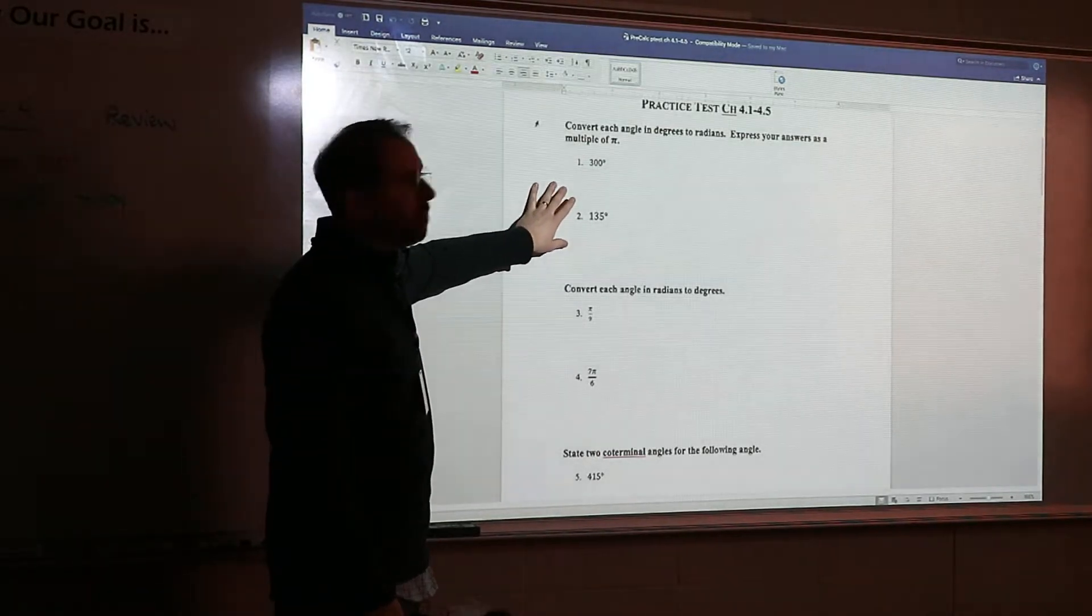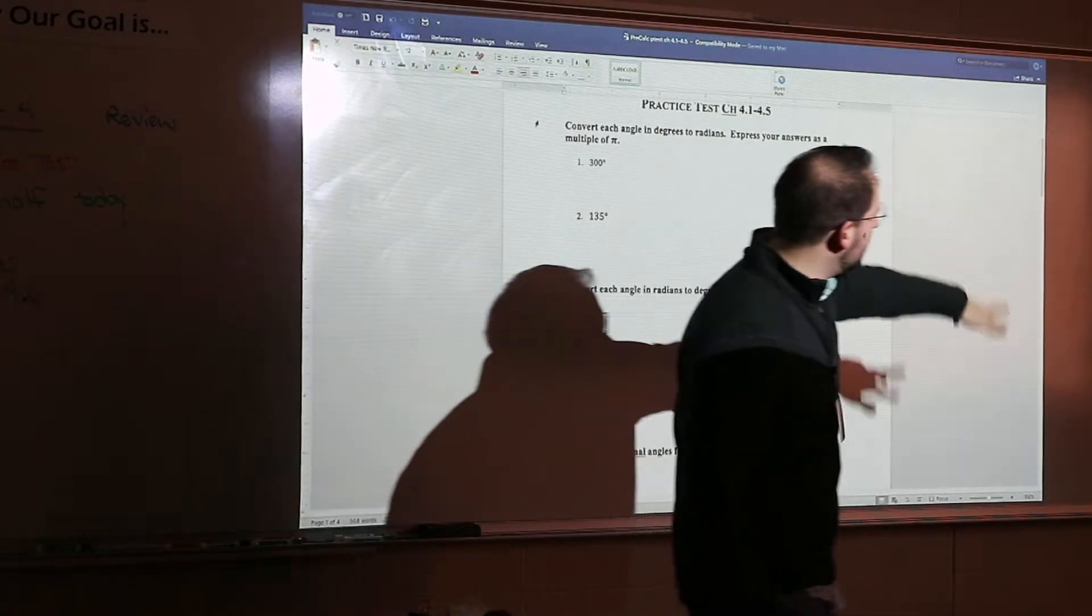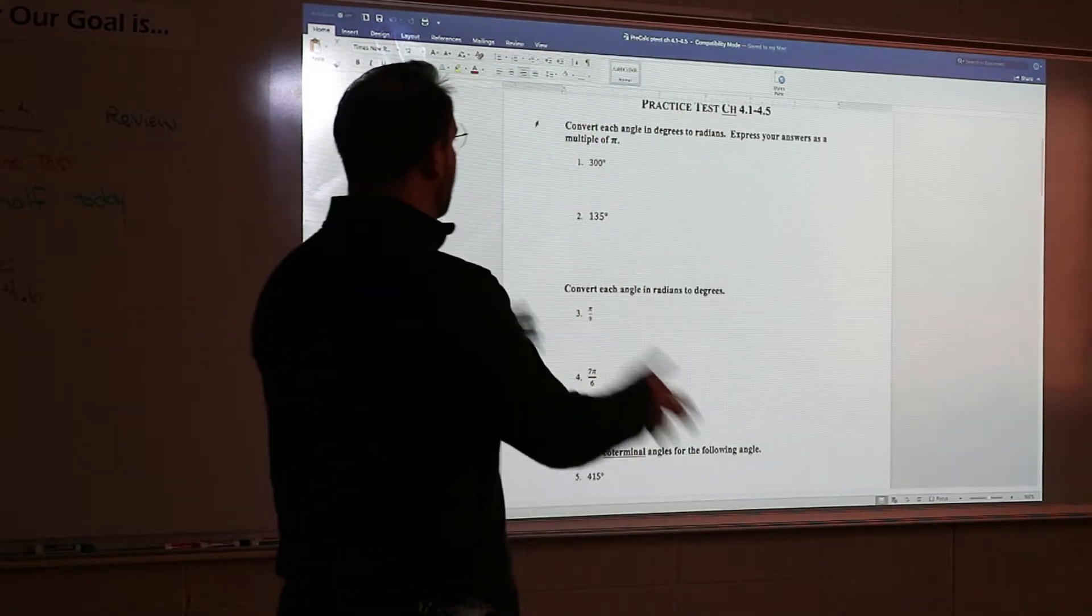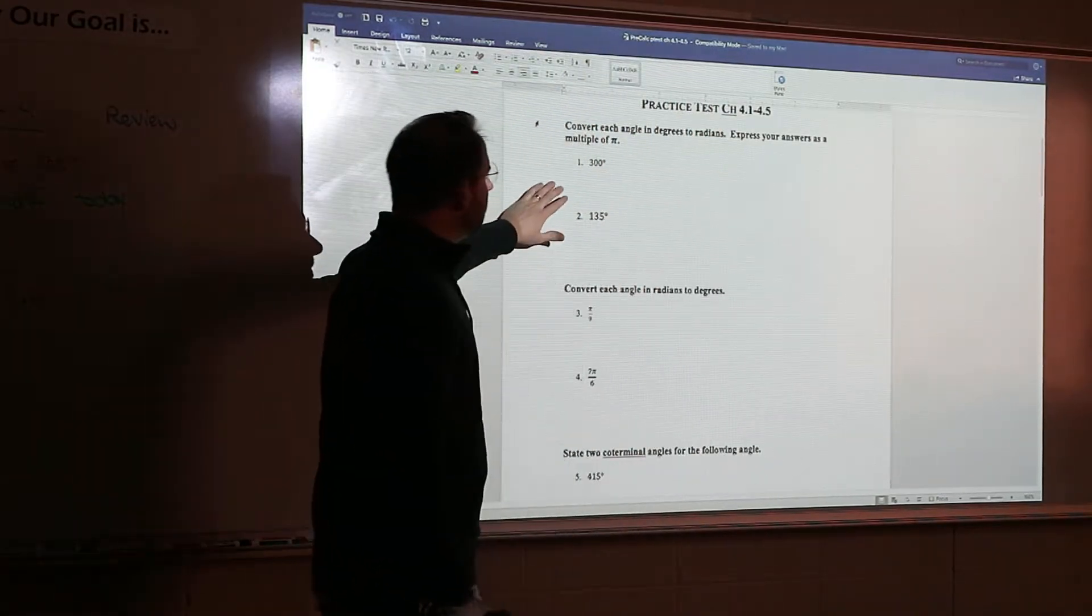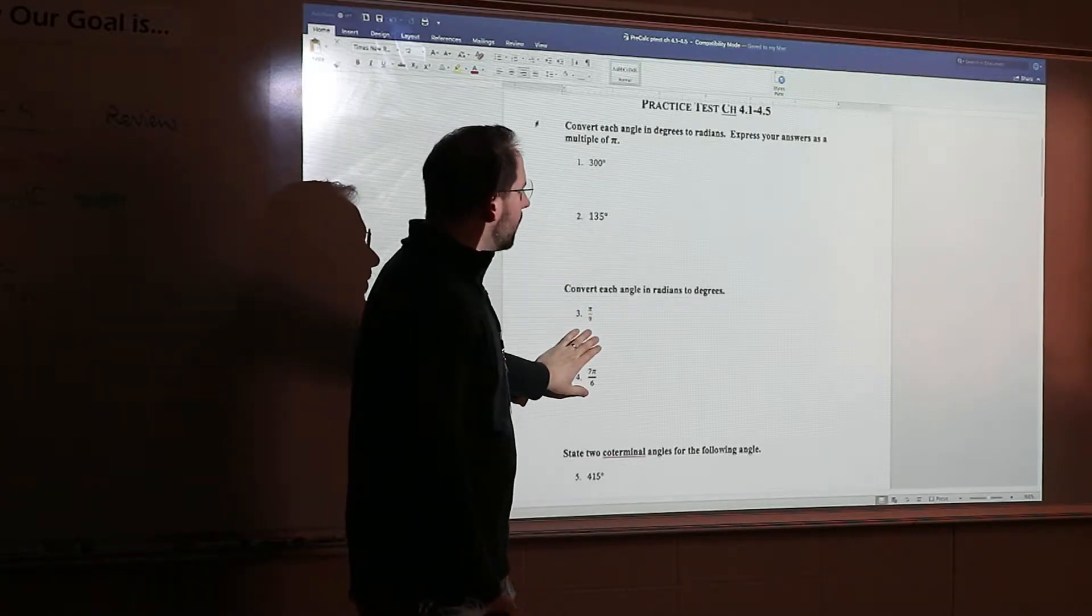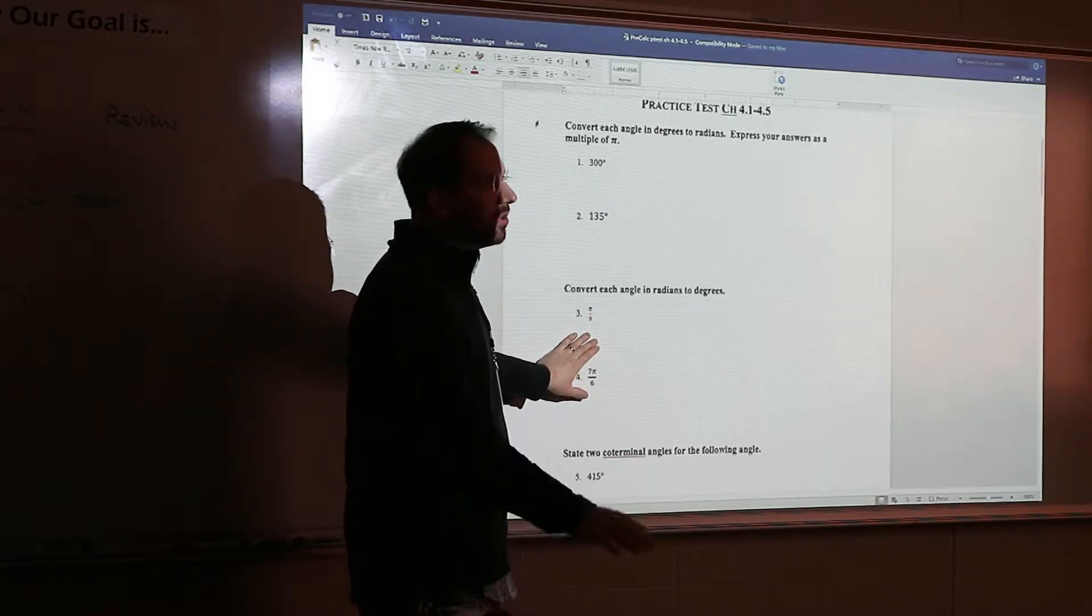The conversion formula will be on the board. It will probably be right on this little blank space up to the side here. That's pi over 180. If you're going one direction, you flip it over, you're going the other way. These require a nice, easy fraction. You simplify the fraction.